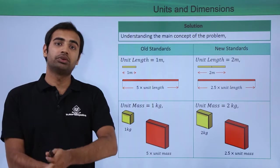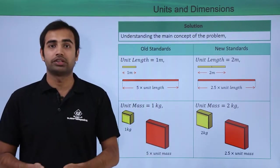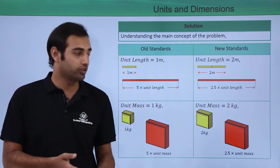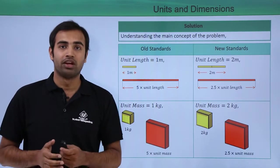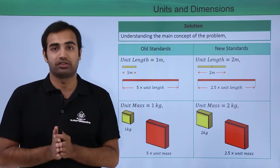But if I change my unit mass itself as 2 kgs, then this red block will weigh 2.5 of the unit mass because the unit mass itself has been transformed into 2 kg block. So, this idea must be remembered and using the same concept, we will start solving this question.